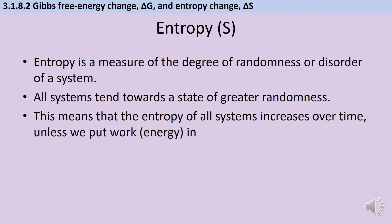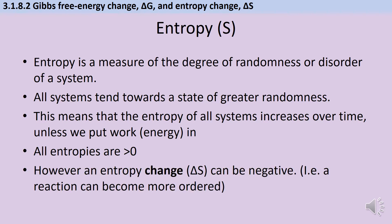Over time, unless we put work or energy in, that entropy will increase and things will become more and more disordered. You need to know that all entropies are positive numbers, but of course we're not actually using entropy itself in the Gibbs free energy formula, we're using the change in entropy. So if entropy decreases because a system becomes more ordered, then the change in entropy ΔS could be negative.